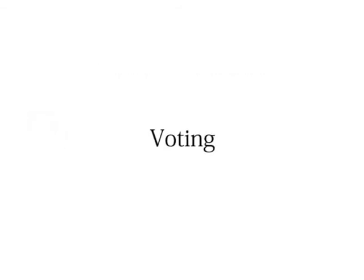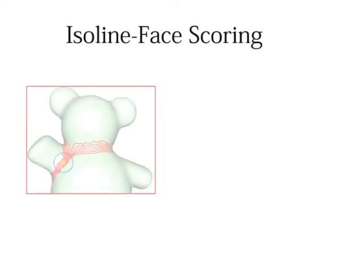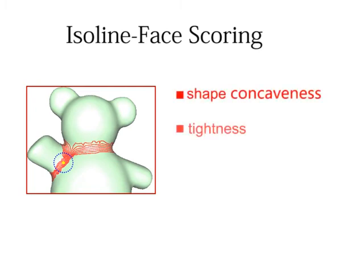We design a voting scheme to pick a best iso line from the candidate boundaries. It relies on an iso line-based scoring mechanism that considers both shape geometry and user intent. Specifically, we measure the following properties of an iso line: the shape concaveness, tightness, proximity to the click point.